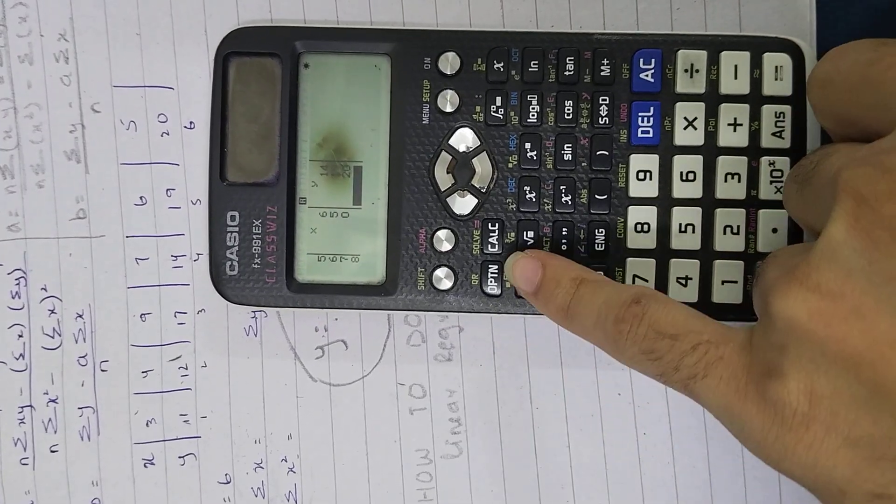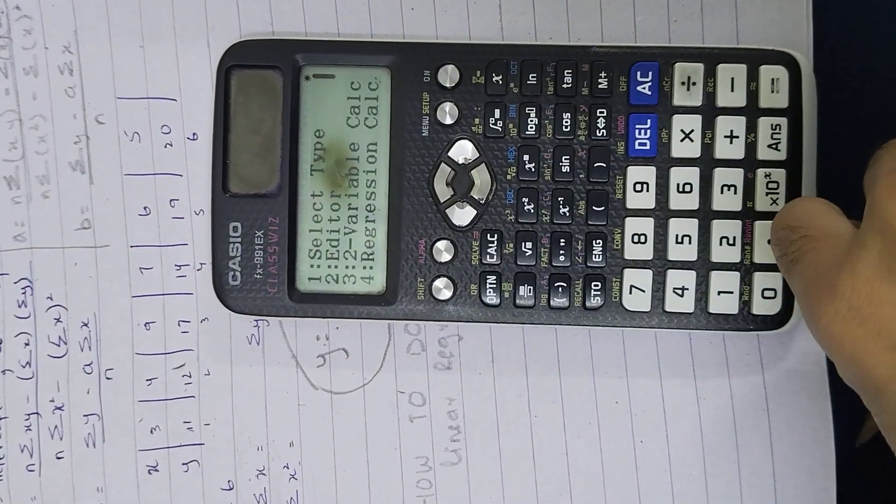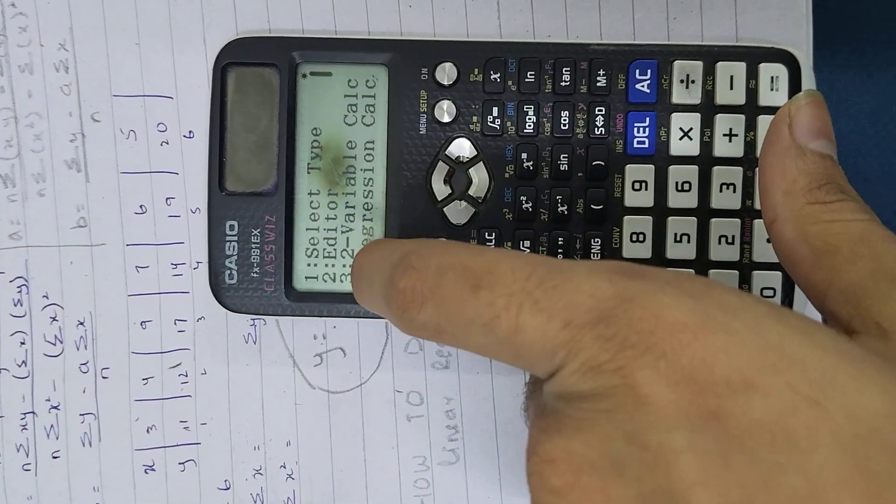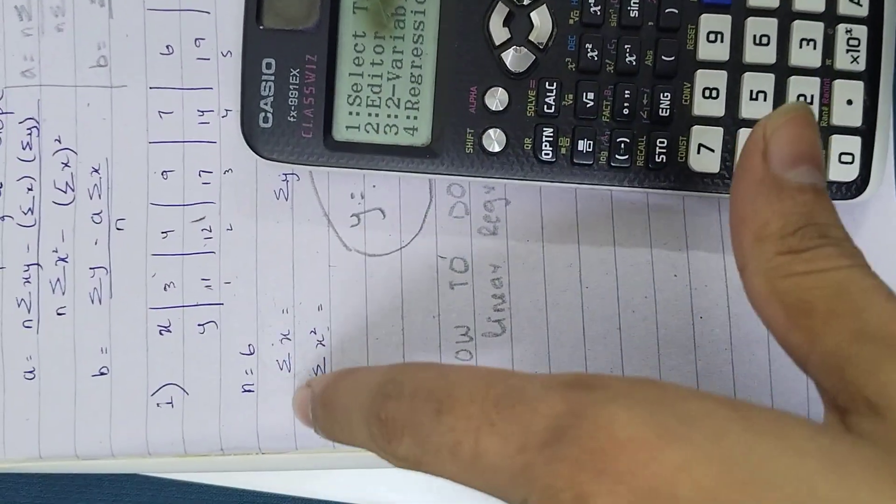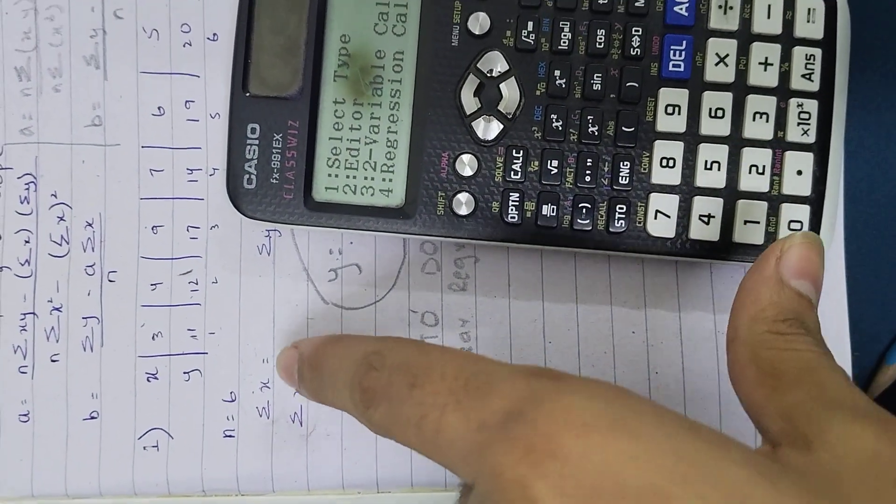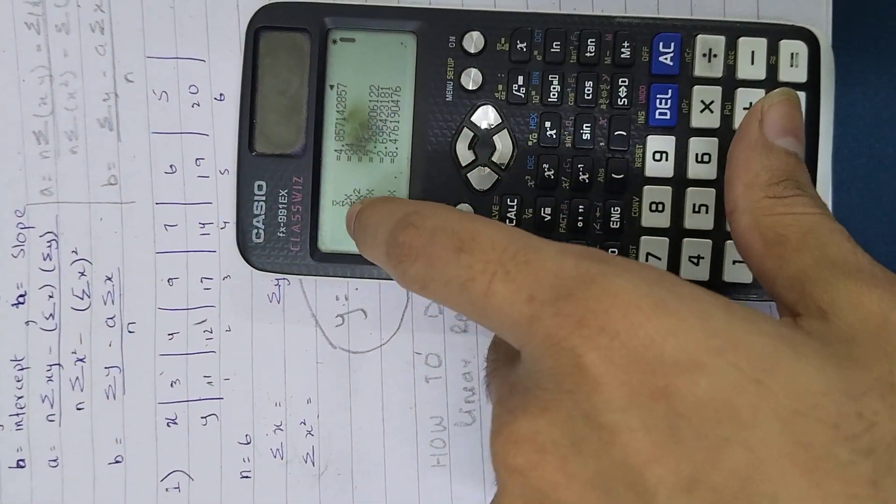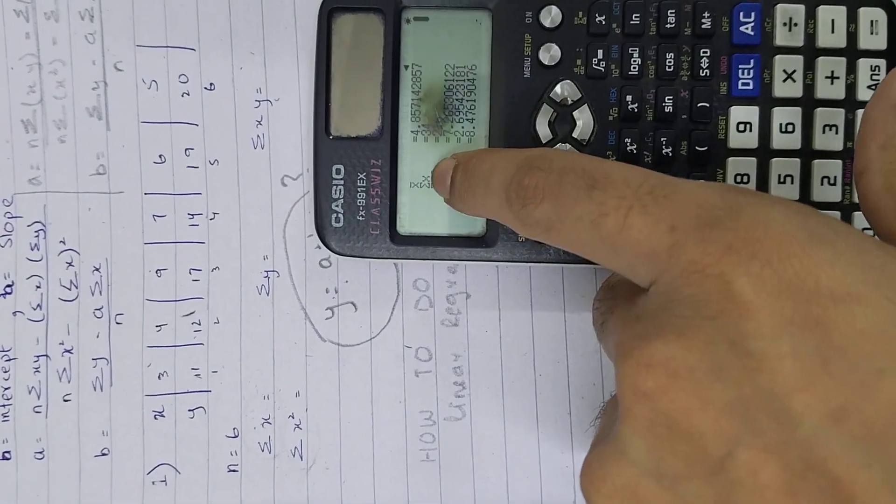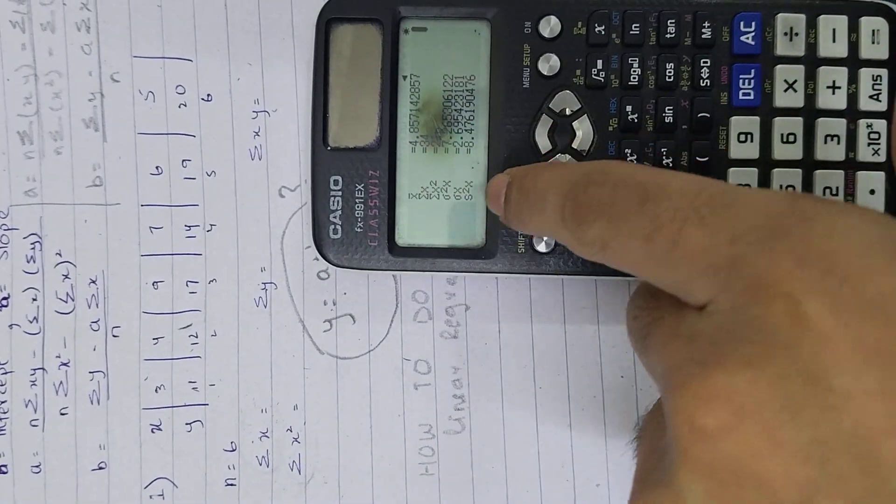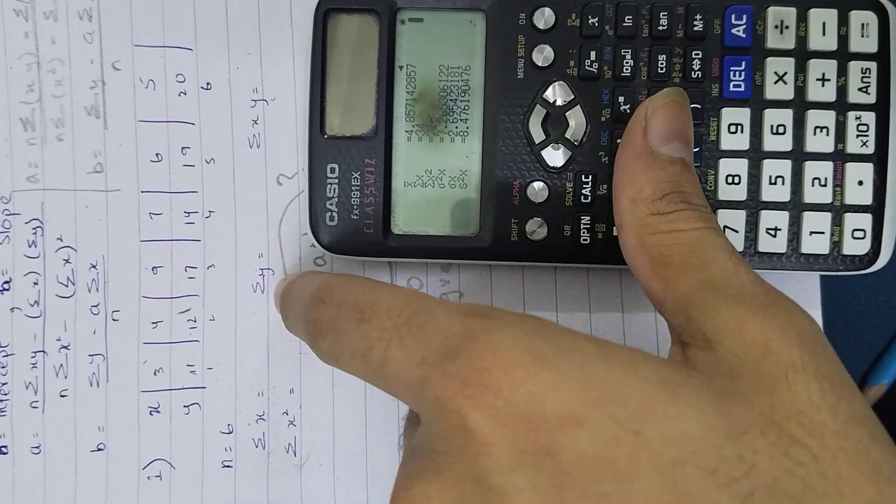Then I press the option button, and if I just want to see the summation, I will press 3 and I will get all the X values. See, summation X is 34.